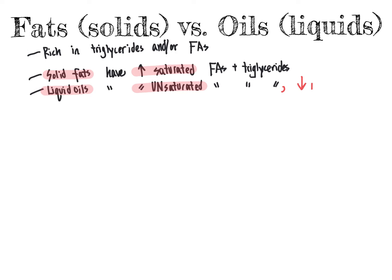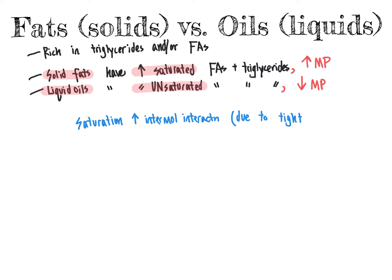So why is it the case that liquid oils with unsaturated groups and solid fats with saturated groups have such different melting points? It has to do with intermolecular interactions. Saturation will allow greater intermolecular interactions compared to unsaturation. The reason is that saturated molecules are able to pack tightly against one another due to van der Waals interactions of the aliphatic or lipophilic alkyl chain present there.